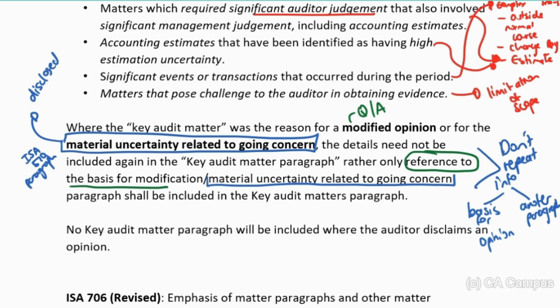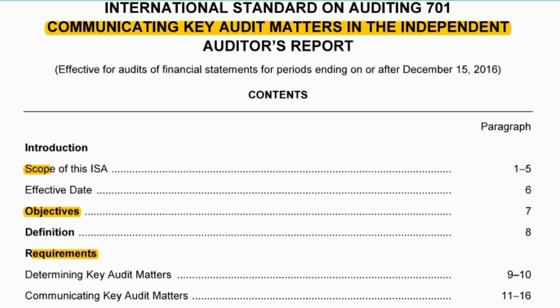Just note that you don't give a key audit matter paragraph if they disclaim the opinion - we just had a look at that in the standards in the appendix for your modification paragraphs. Let's quickly go have a look at ISA 701 so you can see the information about the paragraph, but in order to see how you should structure the paragraph, you need to look at the appendixes in your opinion standards - either in ISA 700 or in ISA 705 where we've just come from.